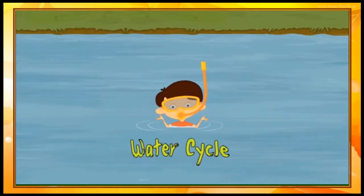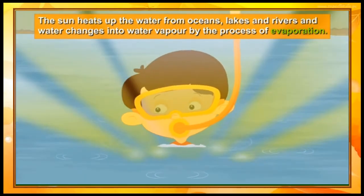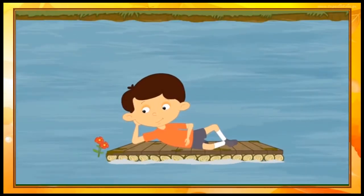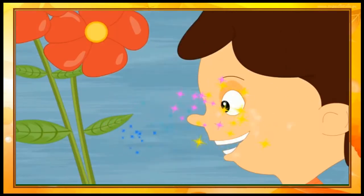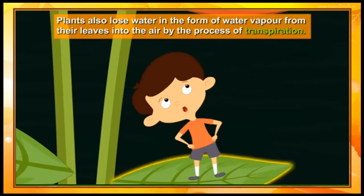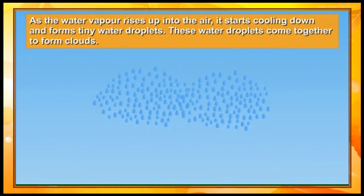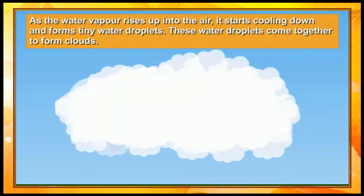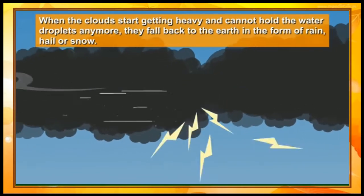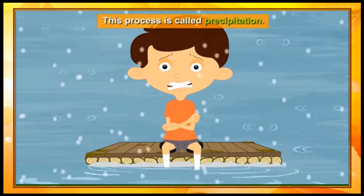Our topic for today is the Water Cycle. The sun heats up the water from oceans, lakes, and rivers, and water changes into water vapor by the process of evaporation. Plants also lose water in the form of water vapor from their leaves into the air by the process of transpiration. As the water vapor rises up into the air, it starts cooling down and forms tiny water droplets. These water droplets come together to form clouds — this process is called condensation. When the clouds get heavy and cannot hold the water droplets any more, they fall back to the earth in the form of rain, hail, or snow. This process is called precipitation.